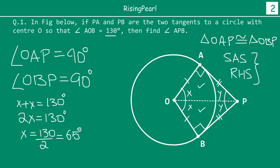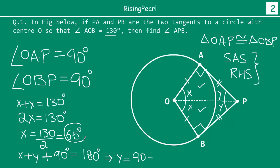Now taking triangle OAP, we know the value of X and we can easily find angle Y. The sum of three angles in a triangle is 180 degrees. So in triangle OAP: X plus Y plus 90 degrees equals 180 degrees. From here, Y equals 180 minus 90 minus X, which is 90 minus 65, which equals 25 degrees. So angle APO equals 25 degrees.